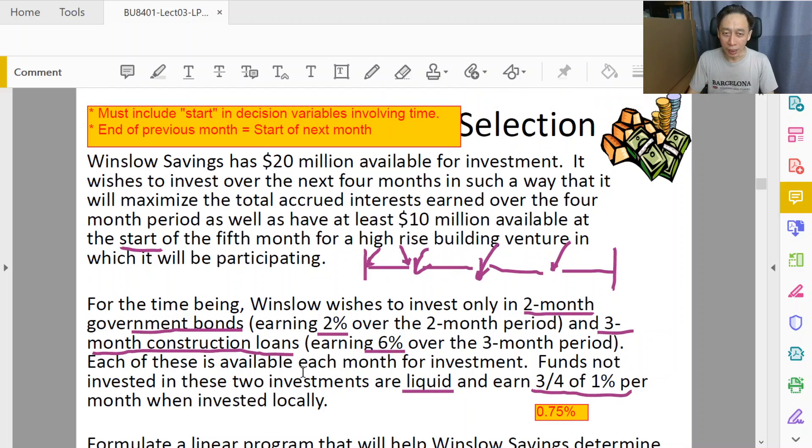At the very start we need to ask how many question marks are there. Winslow has to decide for every month, or rather at the start of every month. There are four months. At the start of every month it doesn't ask one question.